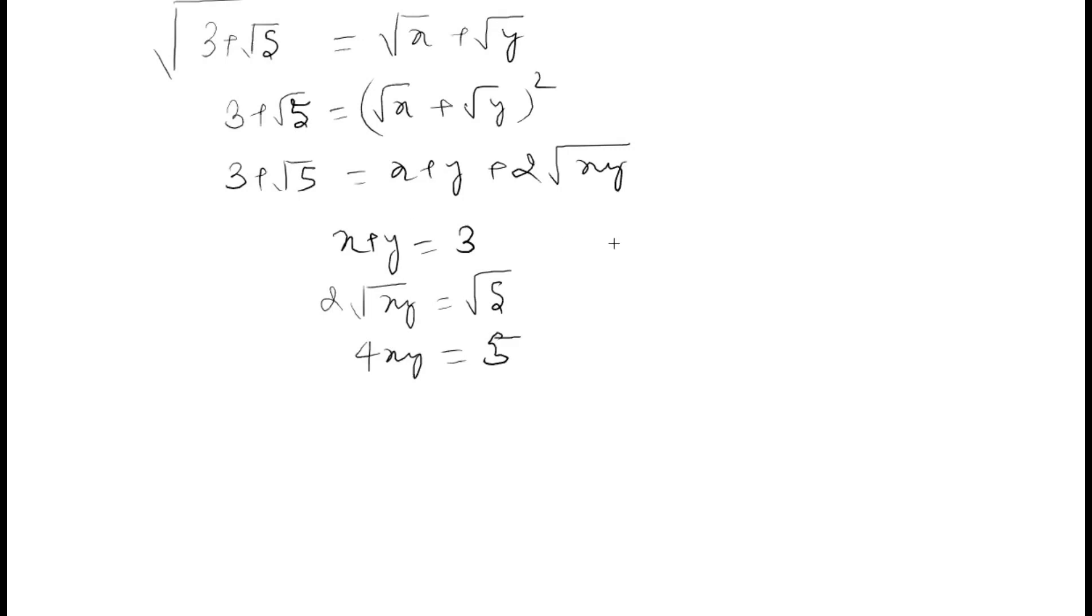Now what you do, this is your equation 1. You can find out what is your x minus y whole square. This is going to be x plus y whole square minus 4xy. When you expand it, you will get the same thing. And why are we doing this? Because we will get two linear equations and we will solve it.